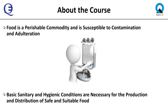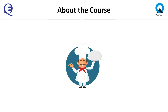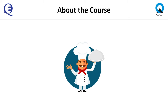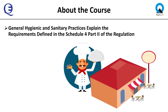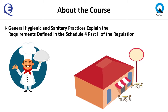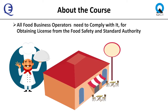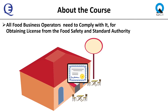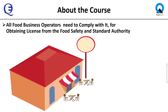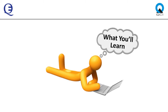Basic sanitary and hygienic conditions are deemed necessary for the production and distribution of safe and suitable food. This program is designed to explain the requirements for general hygiene and sanitary practices defined in Schedule 4, Part 2 of this regulation, which all food business operators need to comply with for obtaining a license from the Food Safety and Standards Authority.